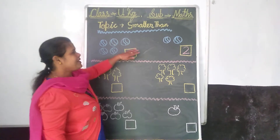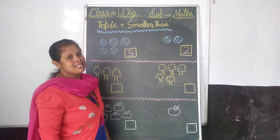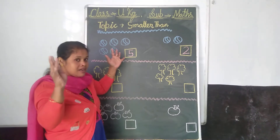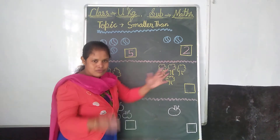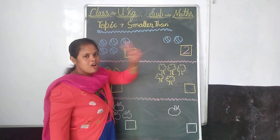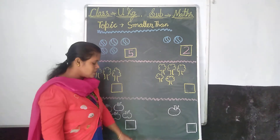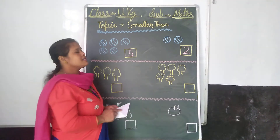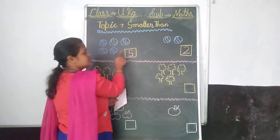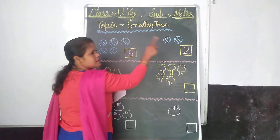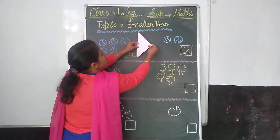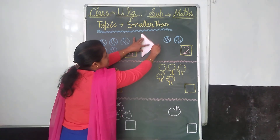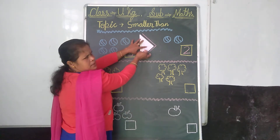Now children, look at the picture and tell me where is this number. Here is a 5 — big number, more number. Here is a 2 — only 2 balls, and here is 5 balls. So where will the crocodile close his mouth? The crocodile will close his mouth on this side. Very good. So this is the smaller than sign.